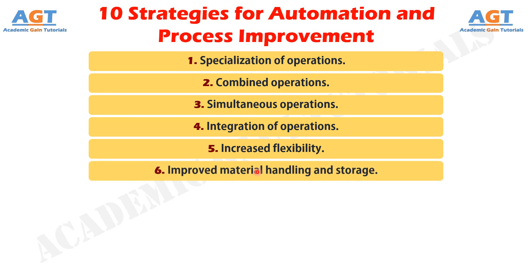Strategy No. 6: Improved Material Handling and Storage. A great opportunity for reducing non-productive time exists in the use of automated material handling and storage systems. Typical benefits include reduced work in process, shorter manufacturing lead times, and lower labor costs.